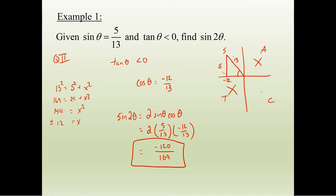Sine 2 theta: the formula is 2 sine theta cosine theta. So we multiply 2 times sine theta times cosine theta: 2 times (5/13) times (−12/13), which gives us negative 120 over 169. The process is: figure out what quadrant we're in, find cosine, then apply the formula.